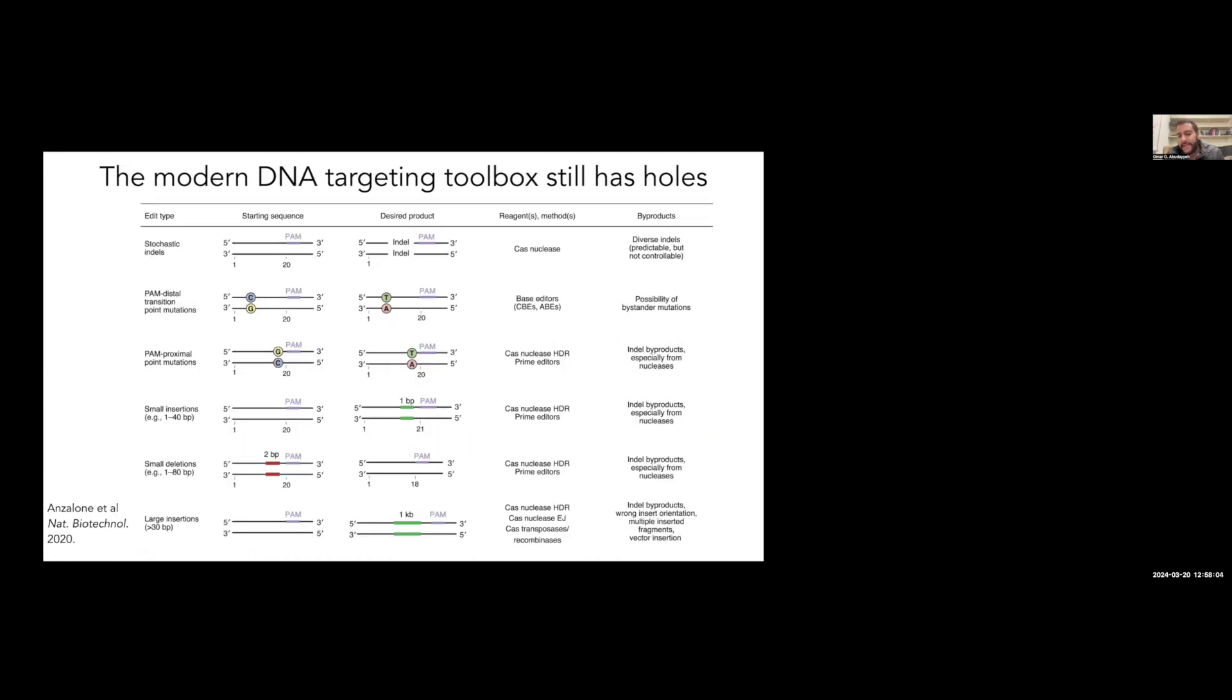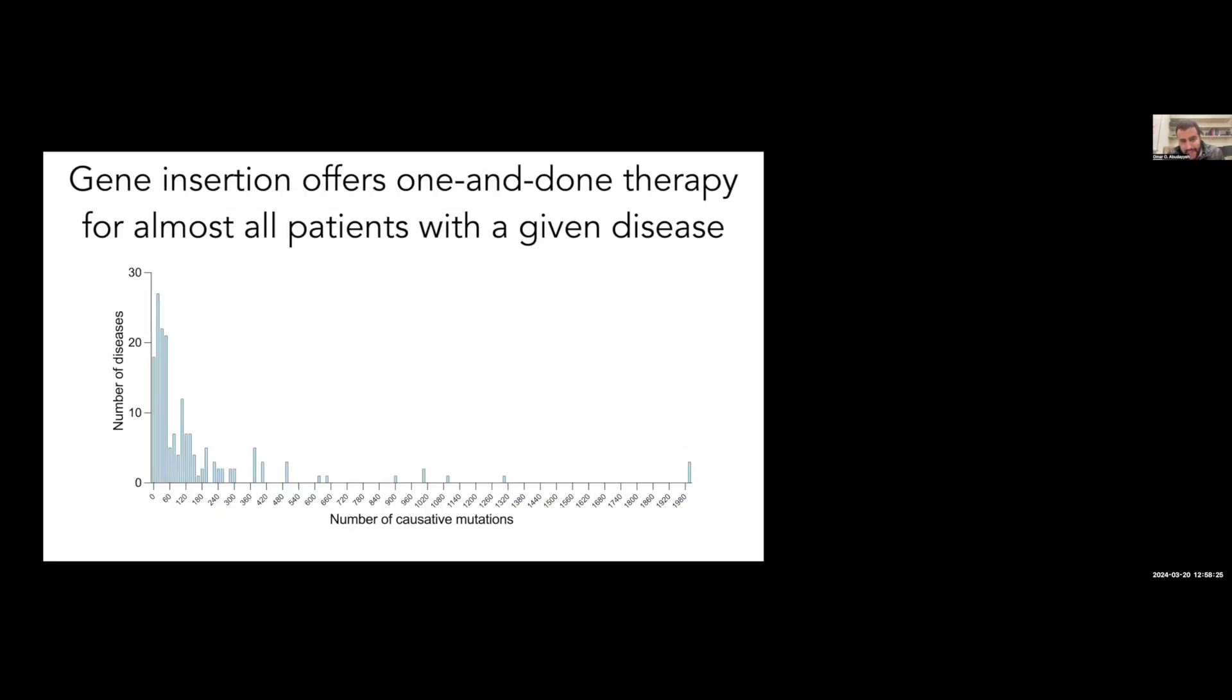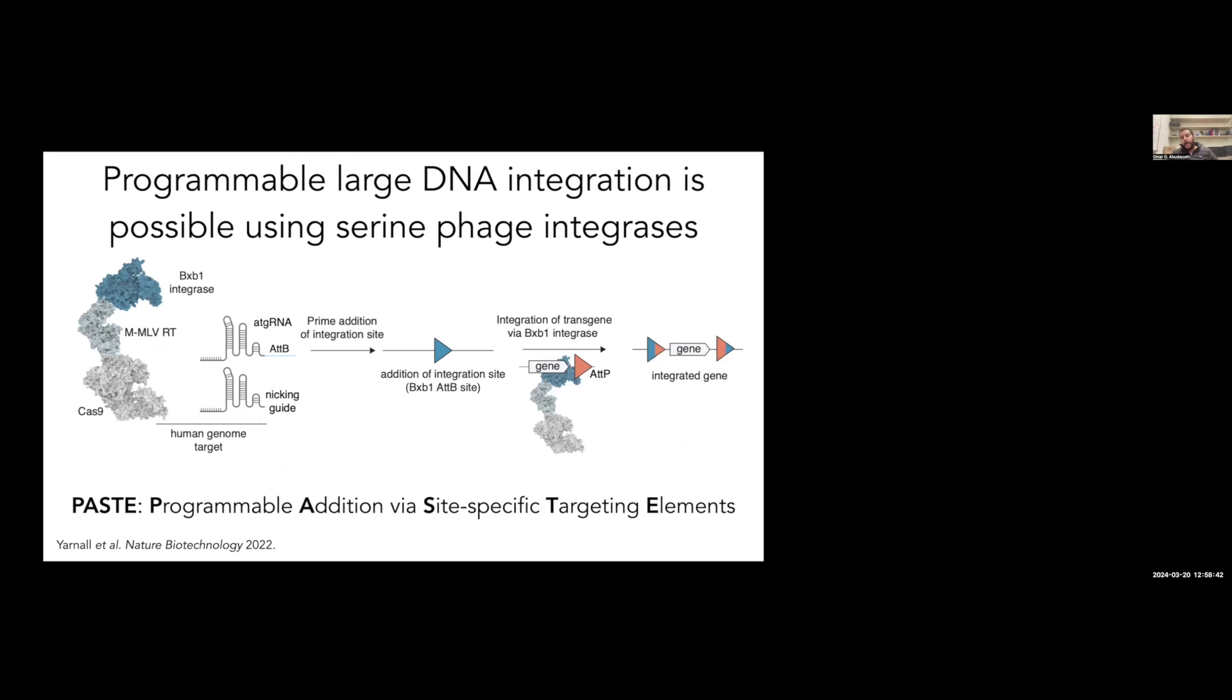When we started our lab four or five years ago, we really felt like large insertions were the kind of thing that were missing. Yes, you could do it with HDR or NHEJ, but there wasn't really good enzymatic approaches that worked regardless of DNA repair and cell cycling in human cells. The reason for this is there's millions of variants in people, 7,000 genetic diseases, and a lot of those diseases have dozens if not hundreds or thousands of mutations, so going mutation by mutation is not really going to develop a cure for everyone.